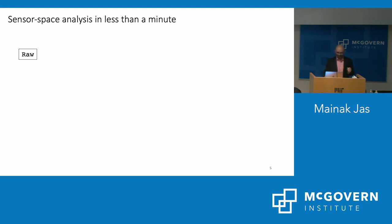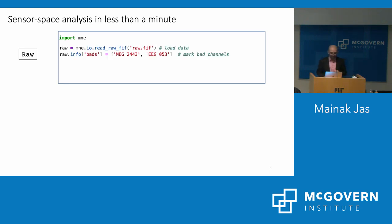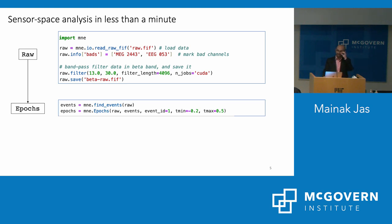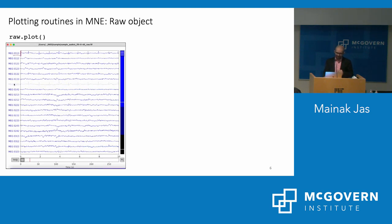Sensor space analysis in less than a minute: first you import the MNE module, then read your file, add bad channels to the data, bandpass filter it, and save back to disk. To create epochs, you identify events of interest using find_events, supply those to the mne.Epochs object, and create epochs. Finally you average them to get evoked responses — pretty straightforward, you couldn't get any simpler than that.